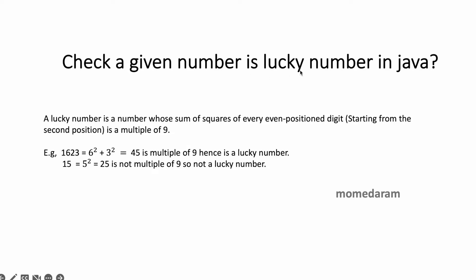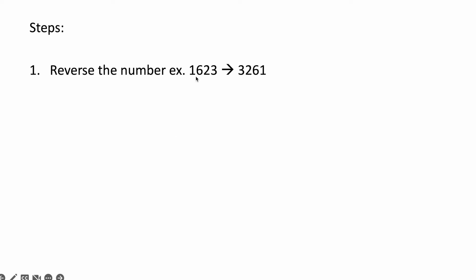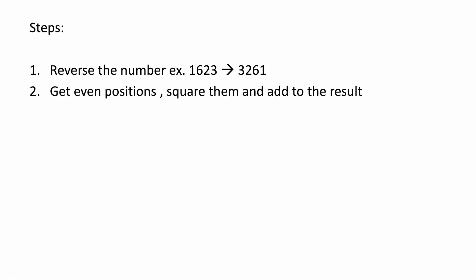To check whether a given number is a lucky number in Java, we will follow these steps. First, we will reverse that number — for example, 1, 6, 2, 3 becomes 3, 2, 6, 1. We reverse because in Java, for strings, arrays, or collections we can get element positions directly, but for numbers we cannot traverse forward to backward — only backward to forward. After reversing, we get even positions, square them, and add to the result. Finally, we check if the result is a multiple of 9.